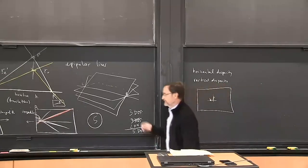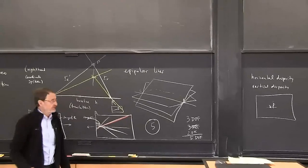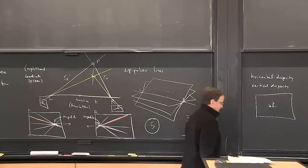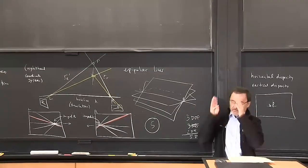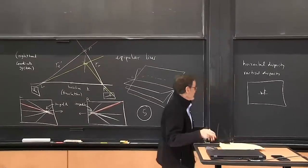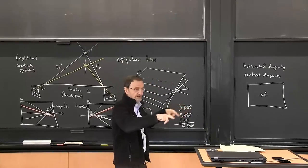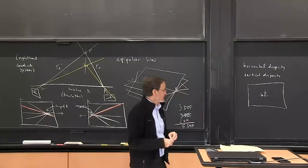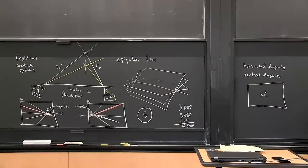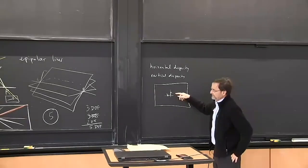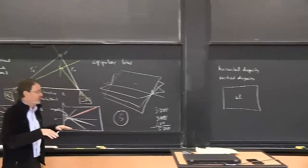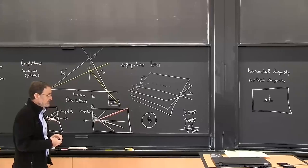The horizontal disparity corresponds to depth — the closer the object, the more the two rays have to cross over. The angle between them gets larger and the image position changes. The vertical disparity, on the other hand, indicates that the two cameras are not oriented the same way — it provides the constraint. If we figure out the rotation and the baseline, we should be able to zero out the vertical disparity everywhere.